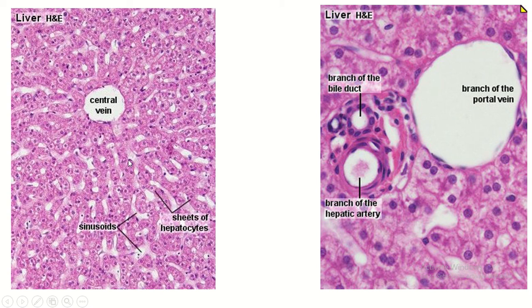In between the hepatic laminae you can see the hepatic sinusoid. Notice the darkly stained nuclei of the endothelium lining the sinusoids with no visible cytoplasm. This is the location of the hepatic sinusoid, which receives mixed blood from the hepatic artery and portal vein. This is the peripheral part of the classical hepatic lobule.